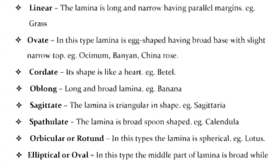Nerium is another shape. Linear — the lamina is long and narrow having parallel margins, e.g., grass. Ovate — the lamina is egg-shaped having a broad base with a slightly narrow top, e.g., Ocimum, banyan, and China rose. Cordate — its shape is like a heart, e.g., betel.